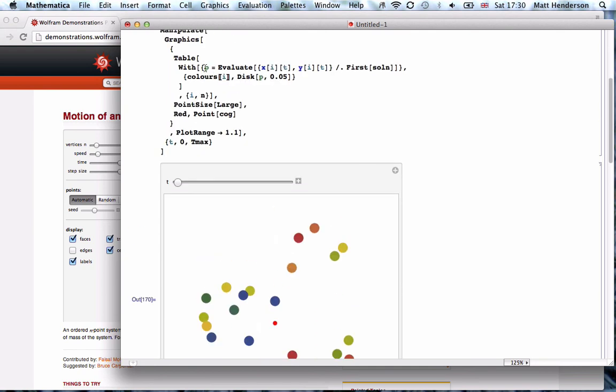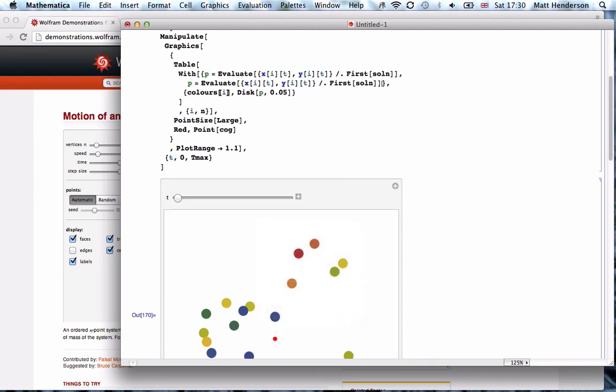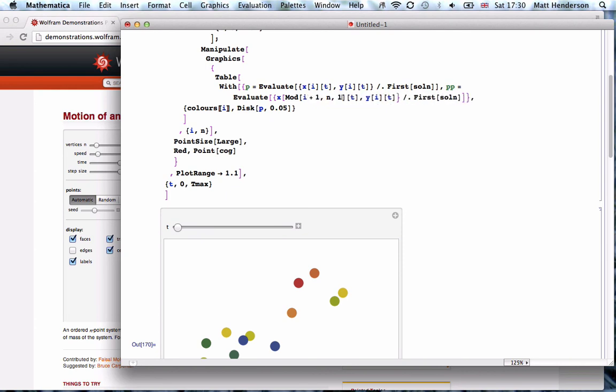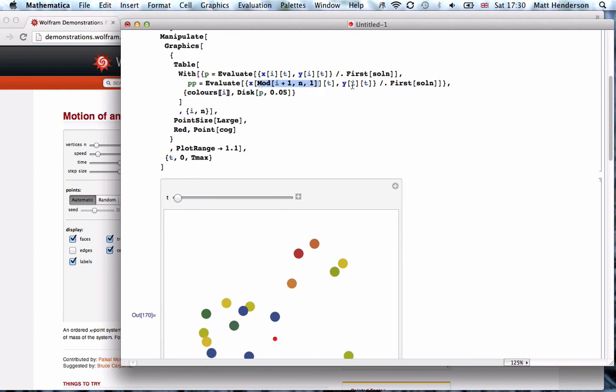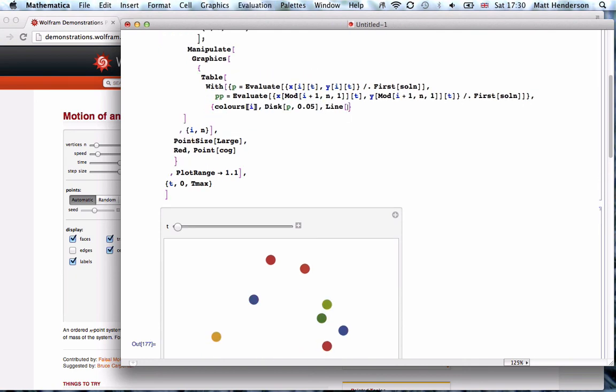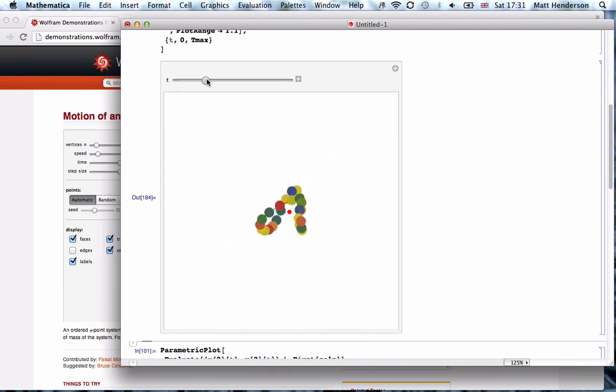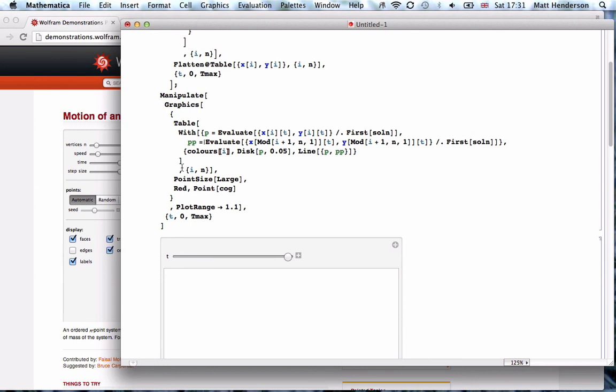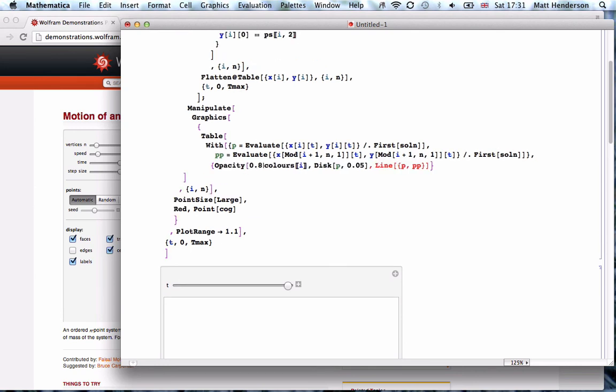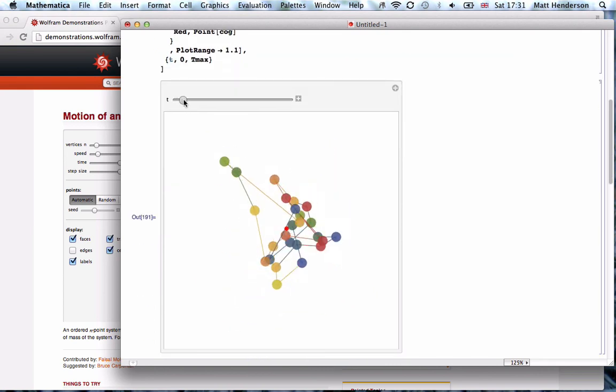Let's also draw a line from each point to the one it's moving towards. pt equals Mod[i+1, n, 1]. We can draw the line between p and pt, so you can see which one it's being attracted towards. I'll work on the visual, it might be good to have a bit of opacity. Yeah, that looks good.